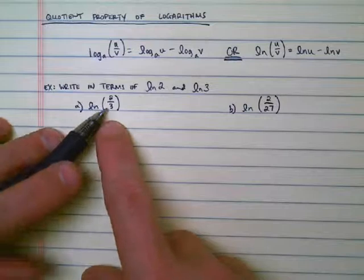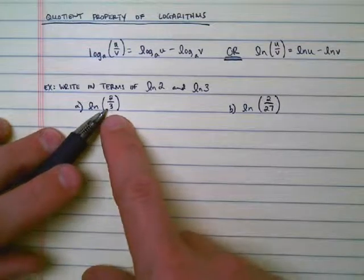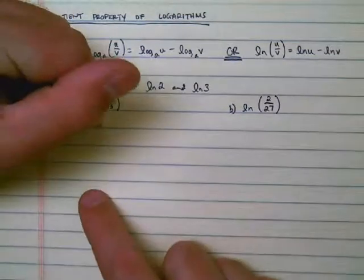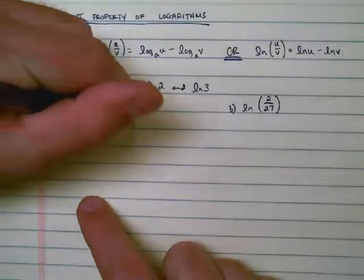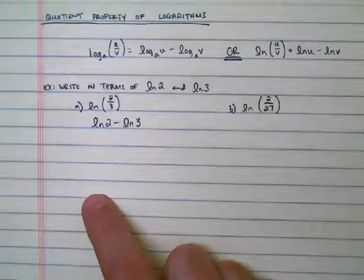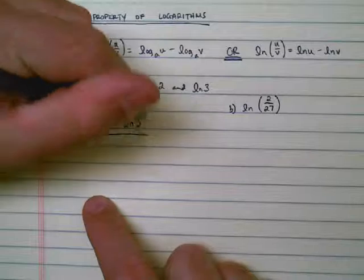I see that I have a 2 on top and a 3 on bottom, which means that I can rewrite this as ln 2 minus ln 3.